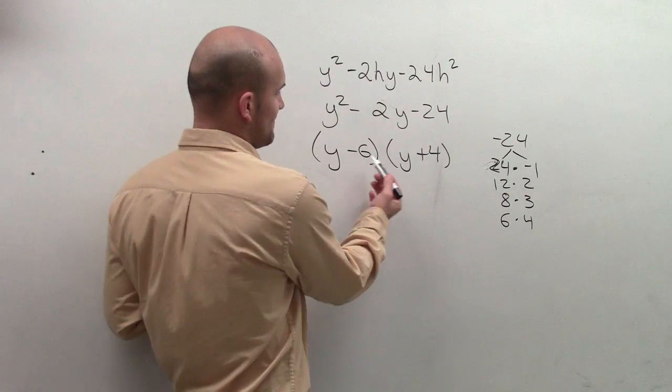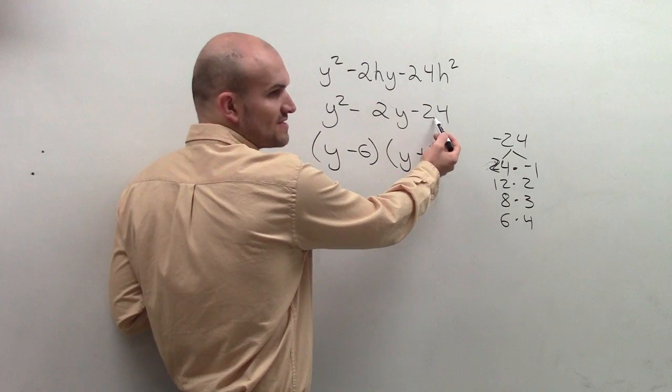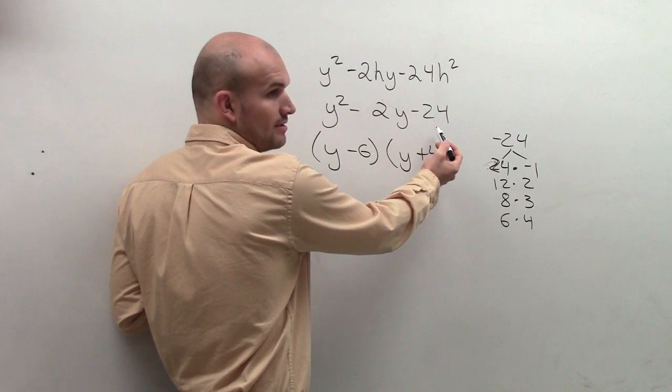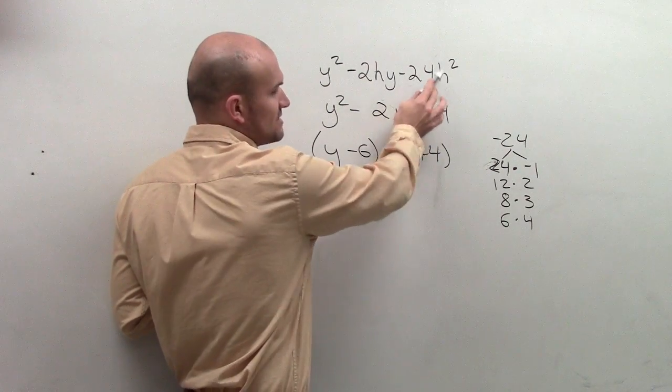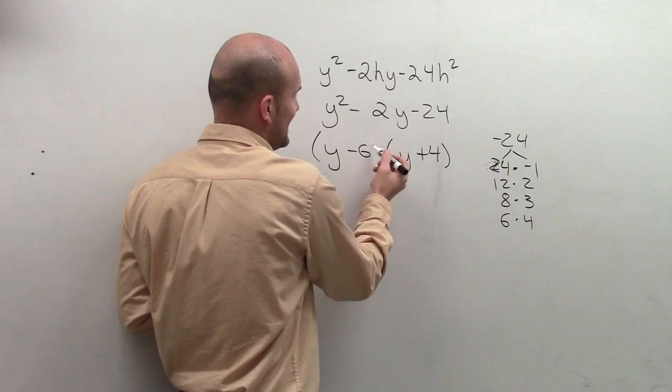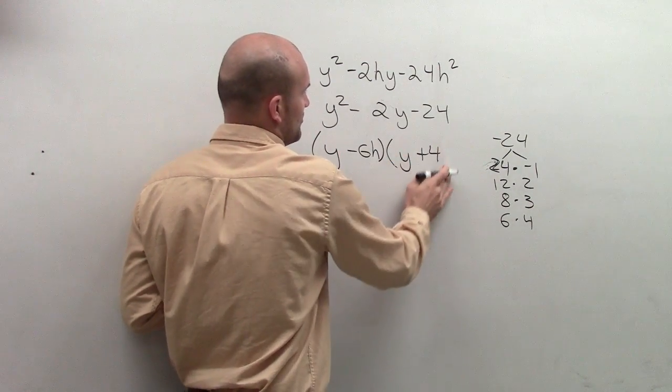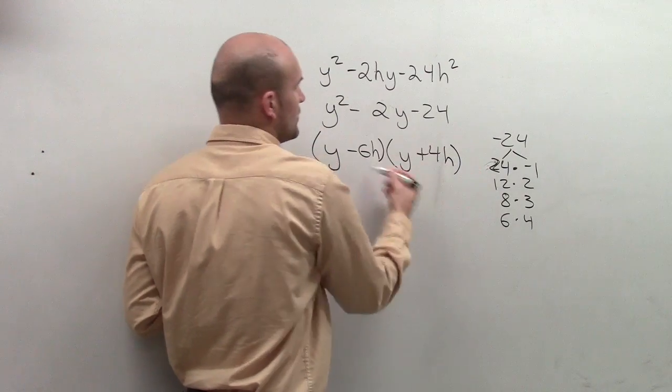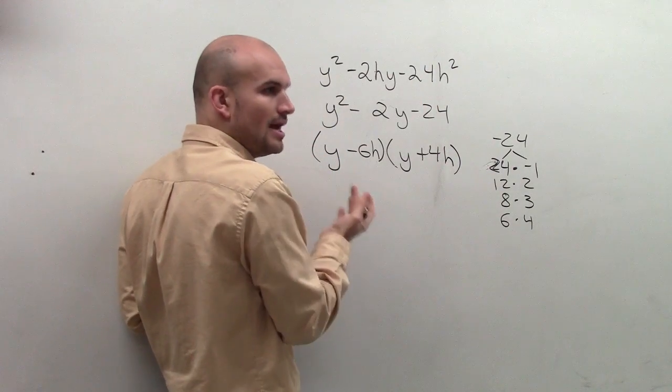Think about what these two terms. If I had negative 6 times 4, we know that gives us negative 24h. So then what would I have to get to be h squared? If I added an h to the ends of both of these, would I now have negative 24h squared? Yes.